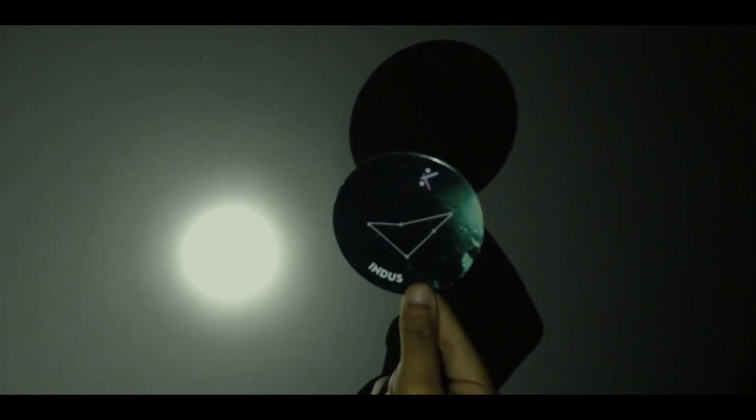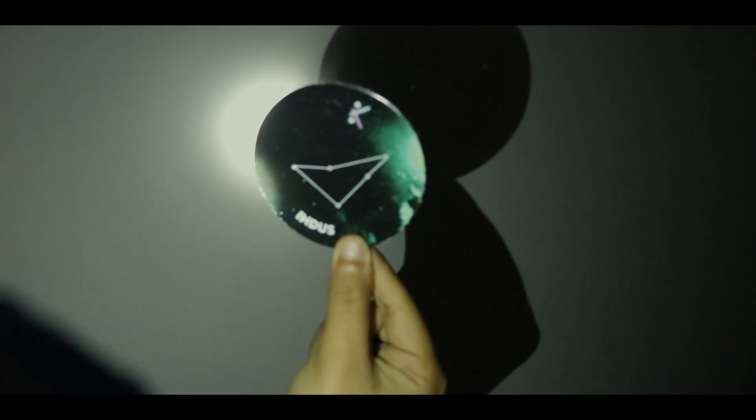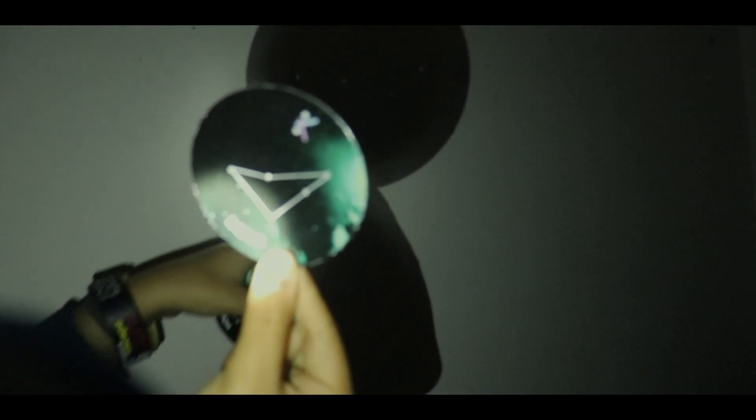Let us try this with one more constellation, that is the Indus constellation. The word Indus, you might have heard about it. This is a very, very large river. And if we see the pattern over here, we can see the stars very easily.